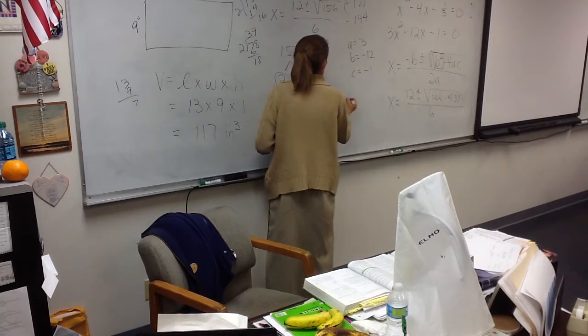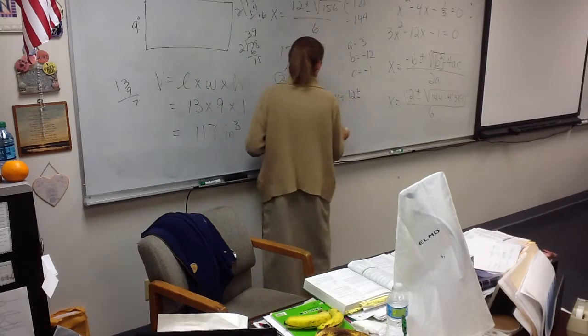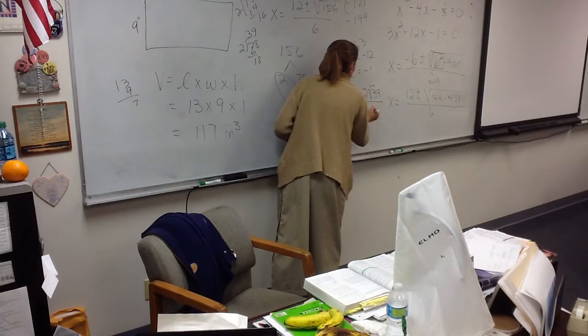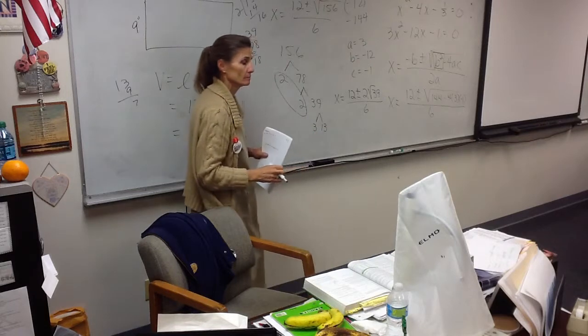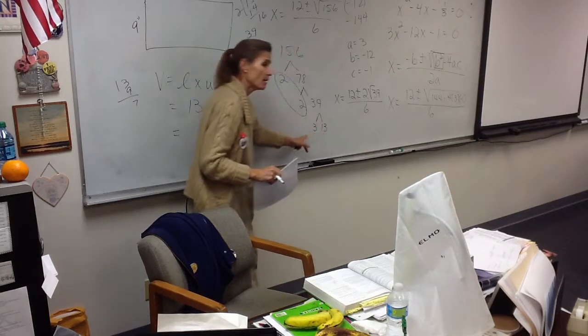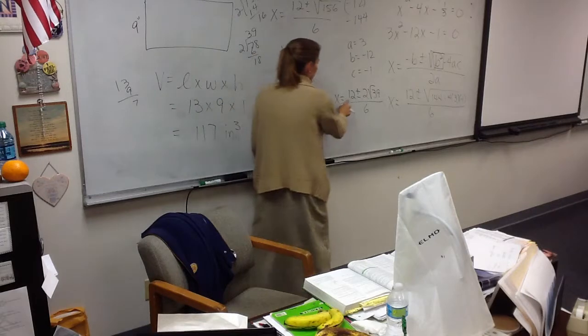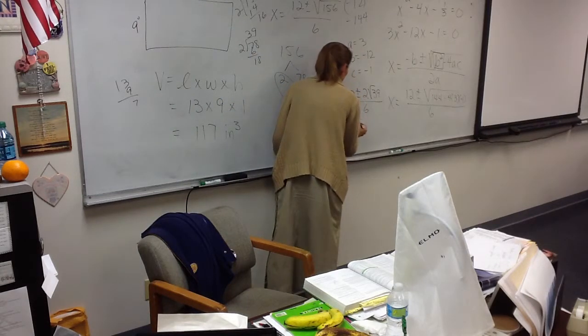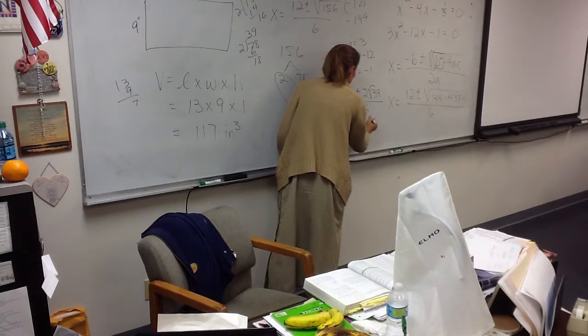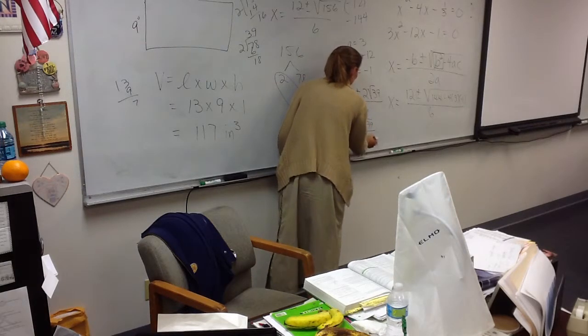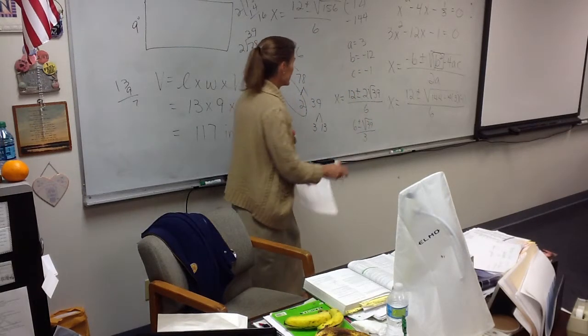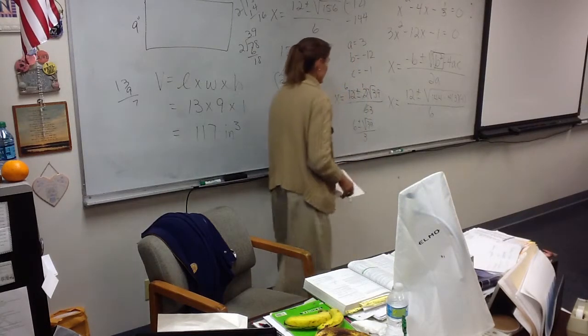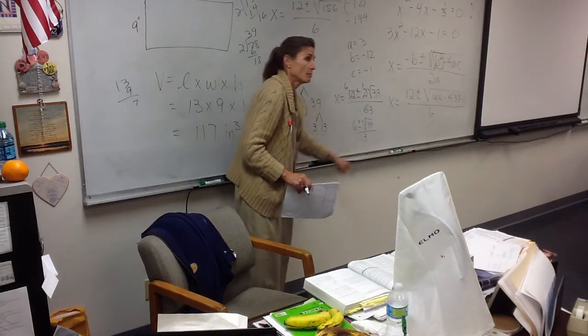So I'm going to have 12 plus or minus 2 root 39 over 6. Because these two didn't come out. Now, see your triangle here? Can you cancel in your triangle? Yep. By 2. By 2. So you're going to have 6 plus or minus the square root of 39 over 3. Yep. Taking a 2 out here, a 2 out here, and a 2 out here. And that is the answer to the problem.